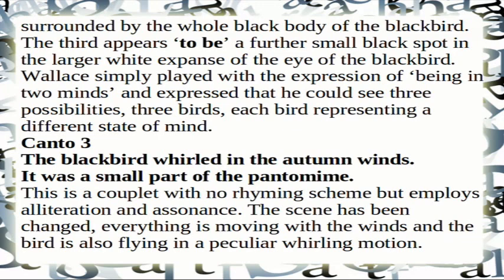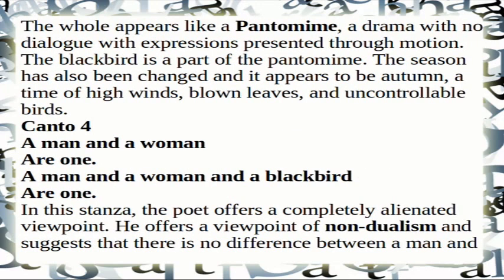Canto 3: 'The blackbird whirled in the autumn winds. It was a small part of the pantomime.' This is a couplet employing alliteration and assonance. The scene has changed — everything is moving with the winds and the bird is flying in a peculiar whirling motion. The whole scene appears like a pantomime, a drama with no dialogue, with expressions presented through motion. The season has also changed to autumn — a time of high winds, blown leaves, and uncontrollable birds.